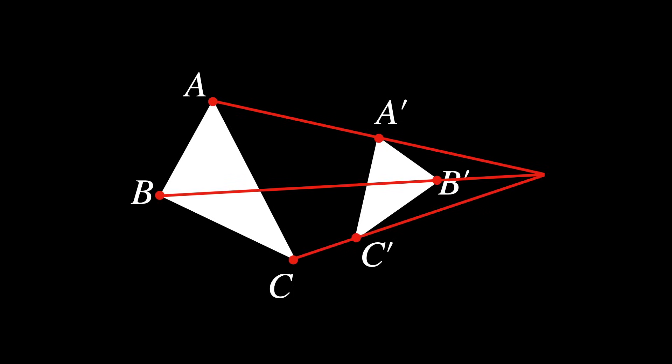If the Desargues' theorem holds, which it will if the triangles are in a special position called perspective from a point, all the lines should meet at a single point, known as the center of perspectivity, which we label P.